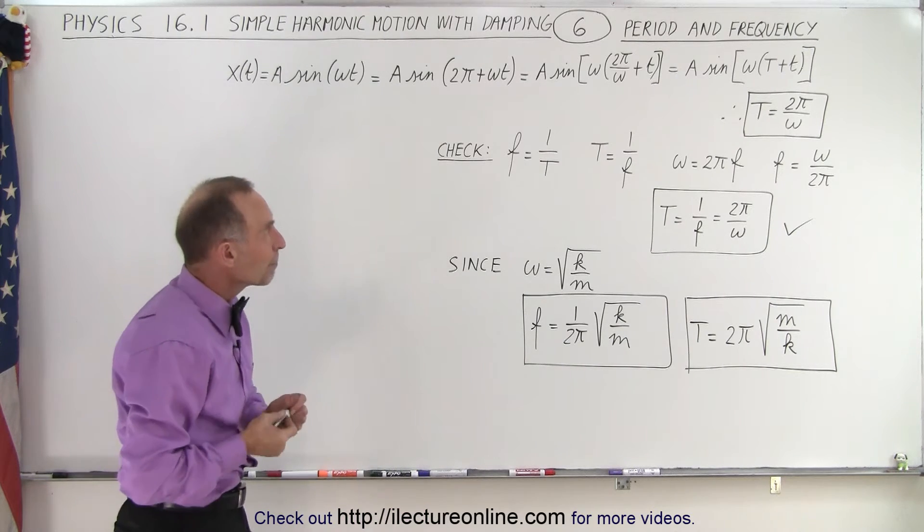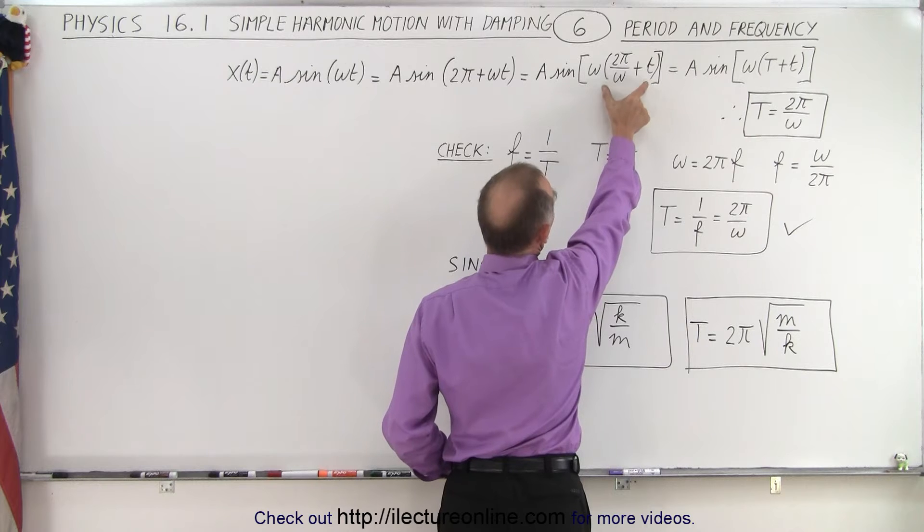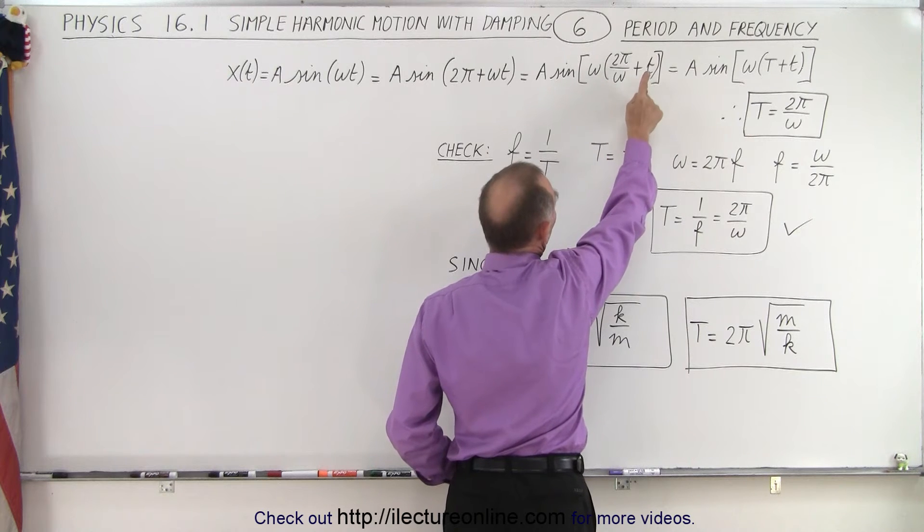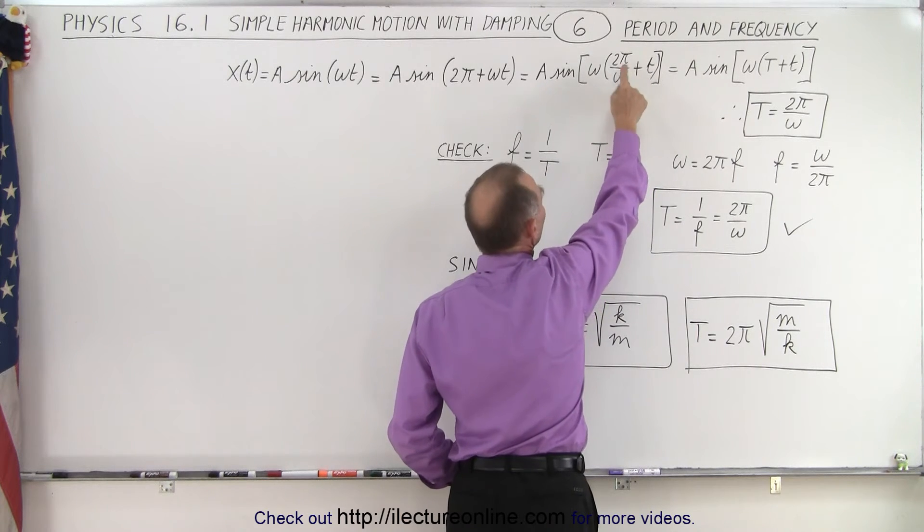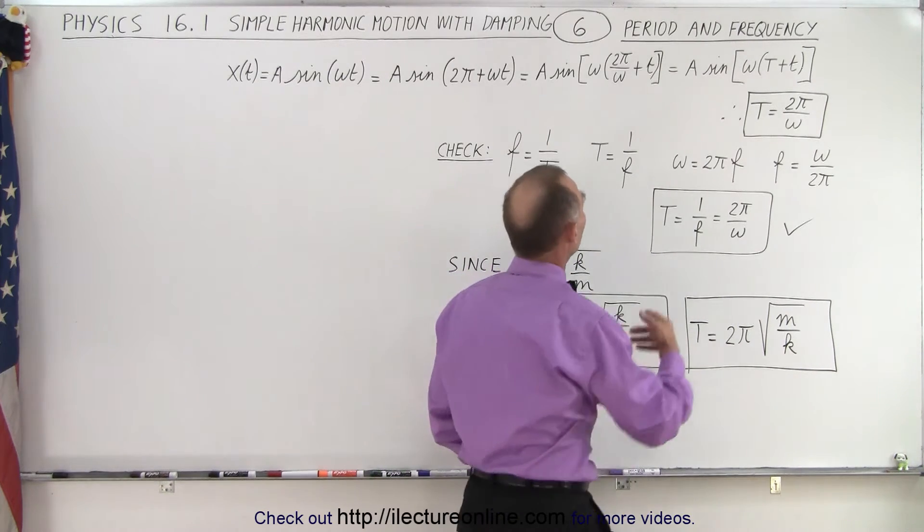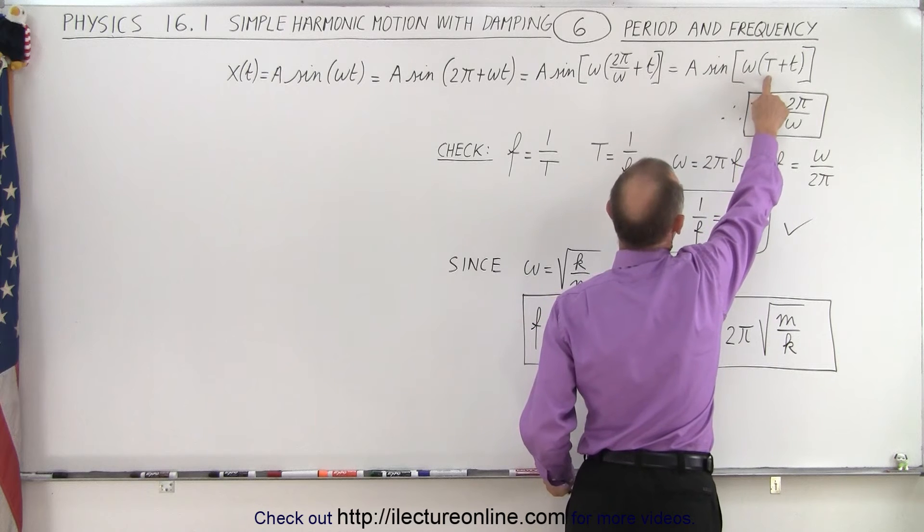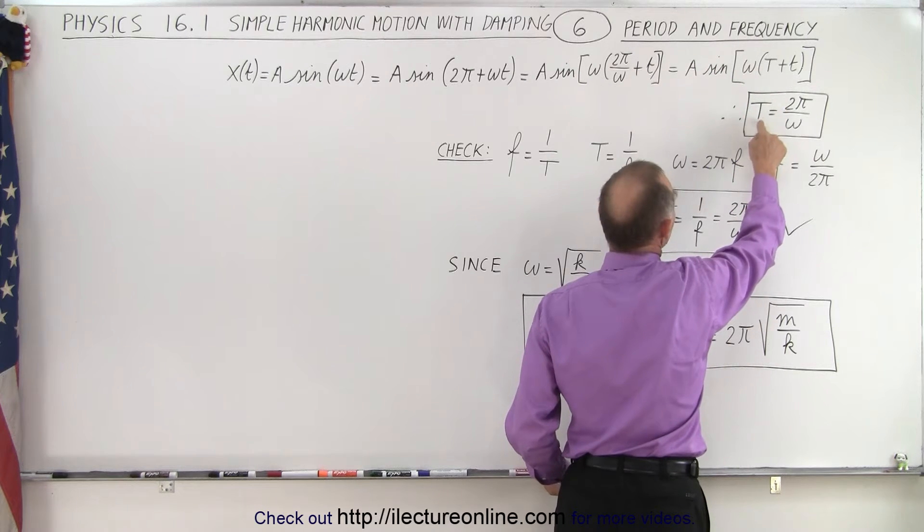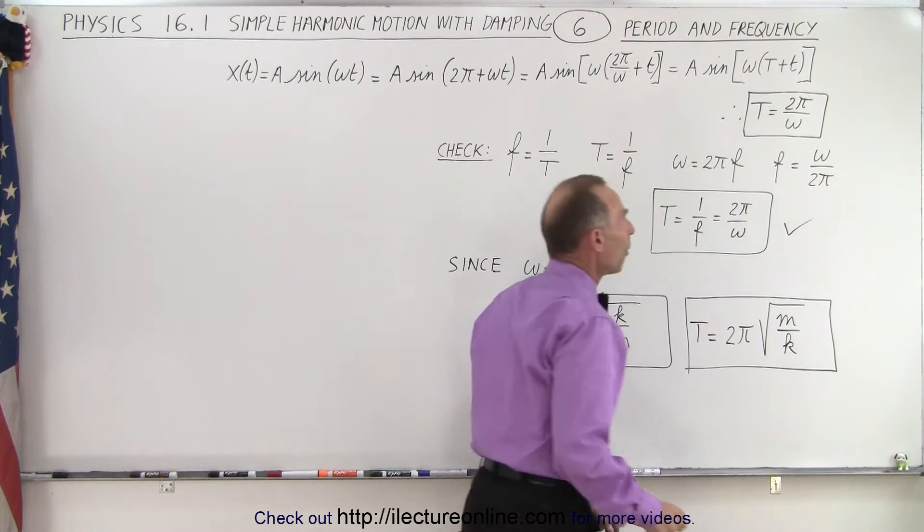And so what that means is that this portion here is a function of time, and so it's the current time plus the time it takes to go an entire period again. So in other words, this can be replaced by the period. We use capital T for period, so we claim that T equals 2 pi over omega.